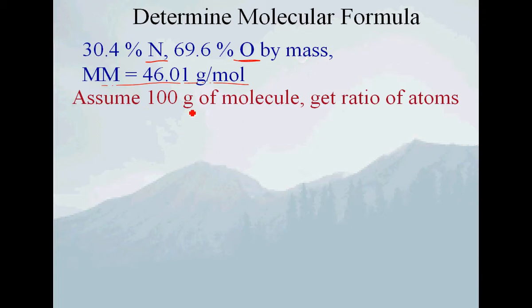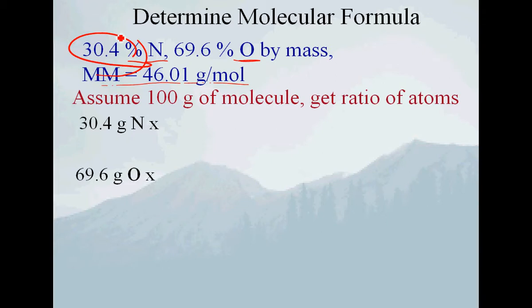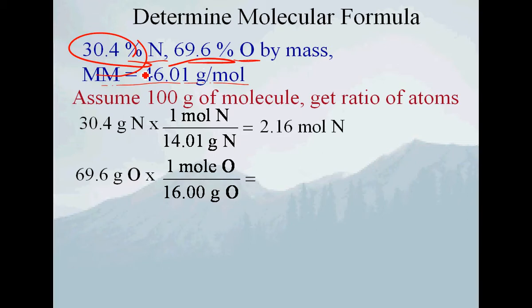The reason we pick 100 grams is because we need to know the actual mole ratio, and we can convert grams of nitrogen and other things to moles. If we have 100 grams of this compound, we have 30.4 grams of nitrogen and 69.6 grams of oxygen. Converting grams of nitrogen to moles gives 2.16, and grams of oxygen to moles gives 4.35. Our empirical formula is not going to be N₂.₁₆O₄.₃₅, so we divide by the smaller number, 2.16.